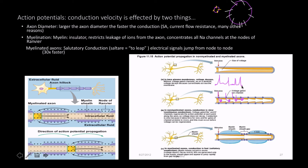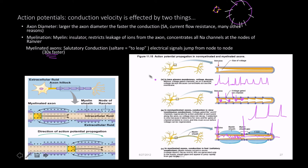Each spike involves depolarization followed by repolarization and hyperpolarization. With myelination, propagation is 30 times faster. This is called saltatory conduction — not after sodium chloride salt, but because the Latin word 'saltare' means to leap. The action potentials propagate in a rapid jumping-like manner from one node to the next, 30 times faster than unmyelinated conduction.